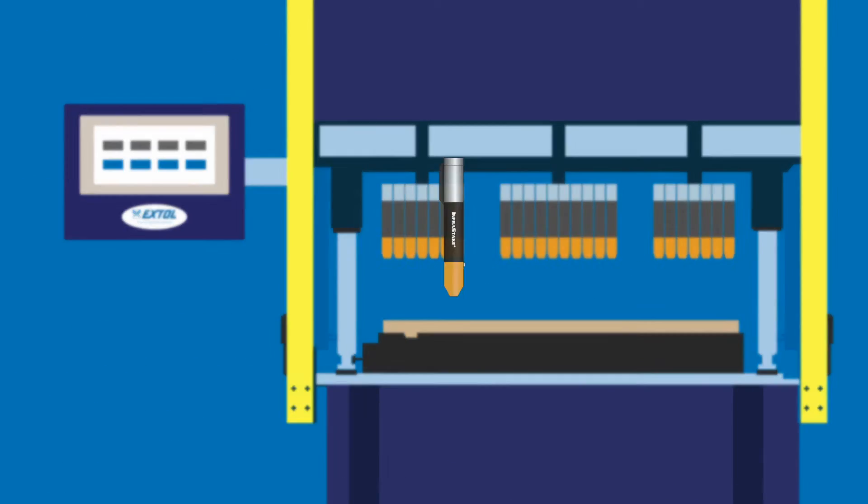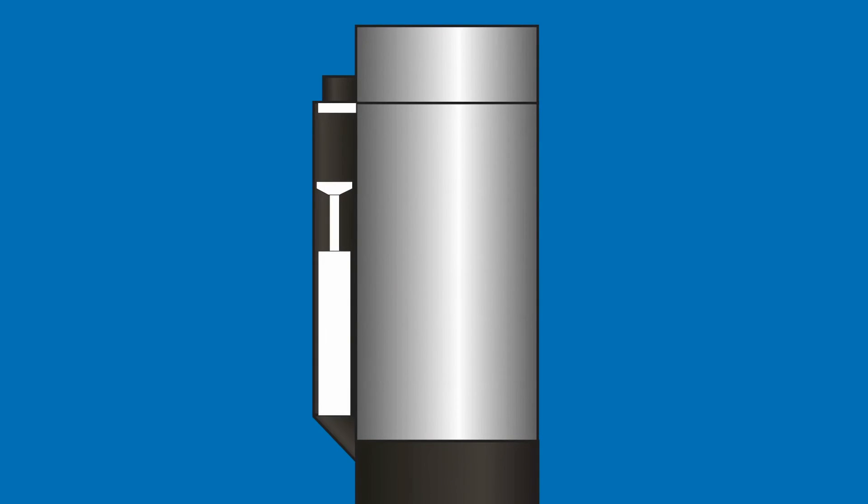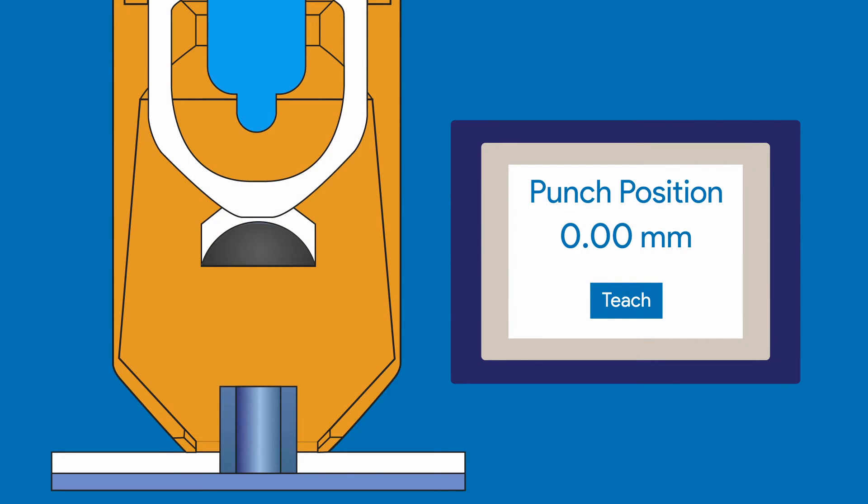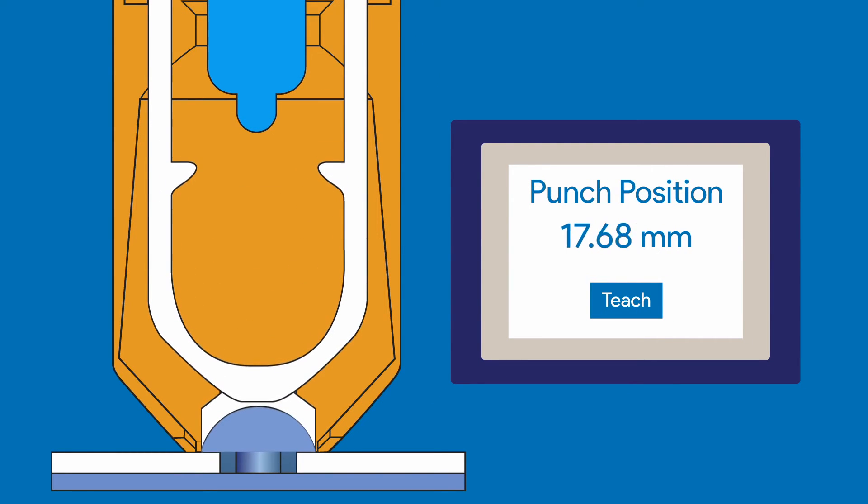The IS-32 module includes a linear potentiometer to measure the actual position of the punch throughout the process, so that the boss detection and full-stroke verification are more accurate and can be programmed effortlessly through the HMI.